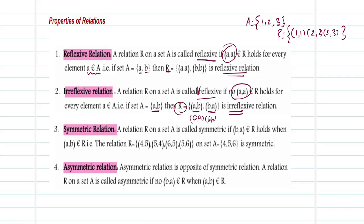Next, symmetric relation. A relation R on a set A is called symmetric if (B, A) belongs to R whenever (A, B) belongs to R. That is, (A, B) belonging to the relation implies (B, A) also belongs to the relation. So if I have a relation {(4,5), (5,4), (6,5), (5,6)} defined on the set {4, 5, 6}, can I call it symmetric? Let us verify.